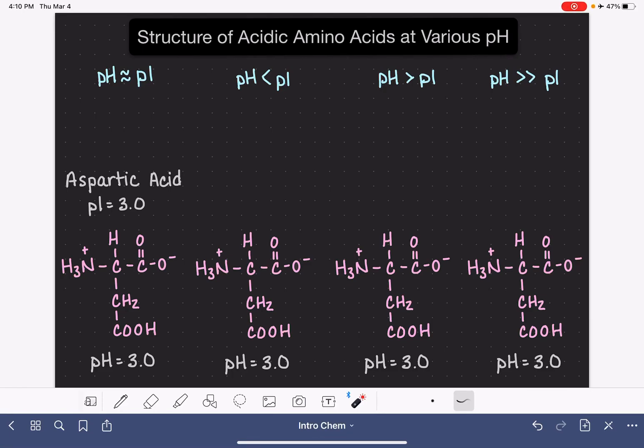In this video I'm going to teach you how to draw the structure of an acidic amino acid at various pH values. To do this I'm going to be using aspartic acid as my example. Aspartic acid has a pI of 3.0. If you're not familiar with the concept of pI, I want you to back up to my previous video where I explain what the pI means.